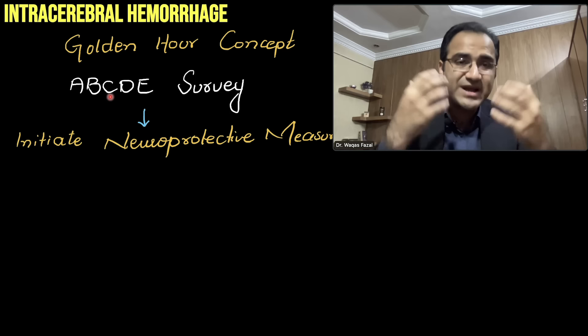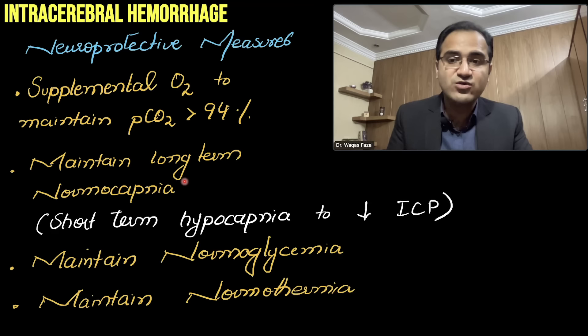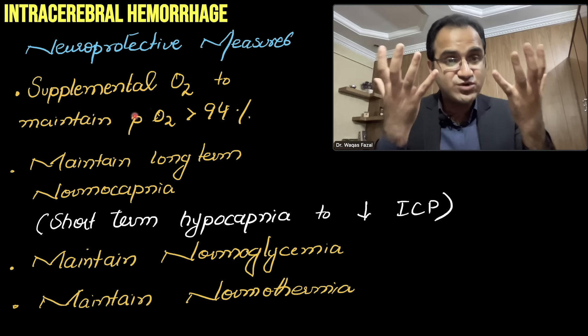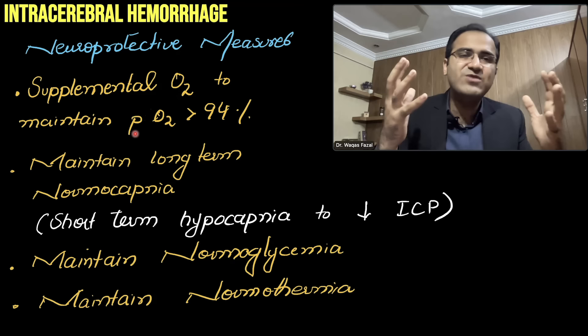Give supplemental oxygen to maintain oxygen saturation above 94%, because even brief hypoxia can permanently damage the brain. If the patient is intubated and on mechanical ventilation, you have the option of controlling carbon dioxide levels in the blood.